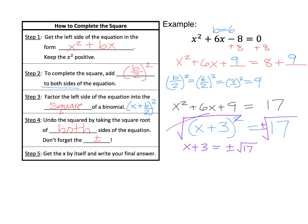At this stage, we should also check to see if the radical can be simplified. This radical, square root of 17, cannot be simplified. So let's go right on to step 5: get the x by itself and write your final answer. Right now it's x plus 3, so to get rid of that plus 3, we subtract 3 on each side, keeping the plus or minus in front of the square root of 17. So the final answer is x equals negative 3 plus or minus the square root of 17.